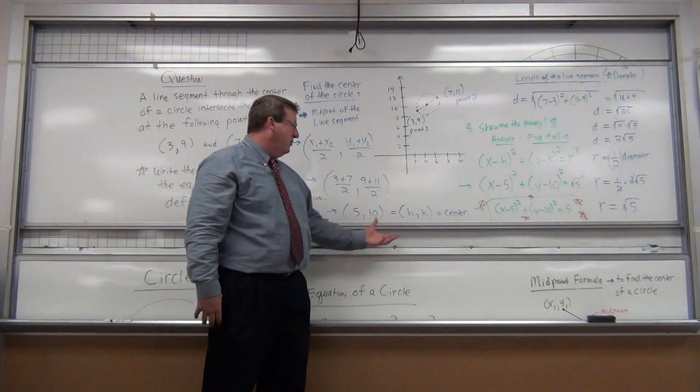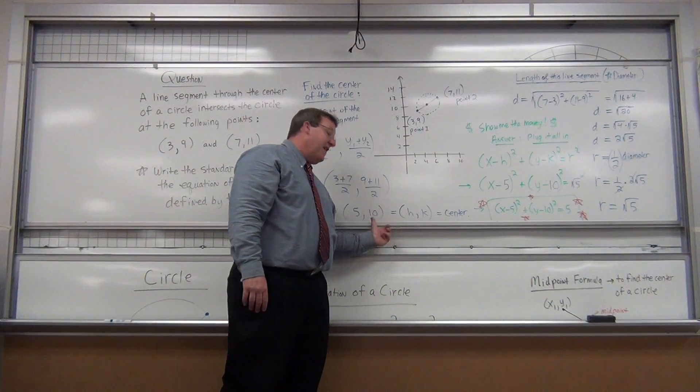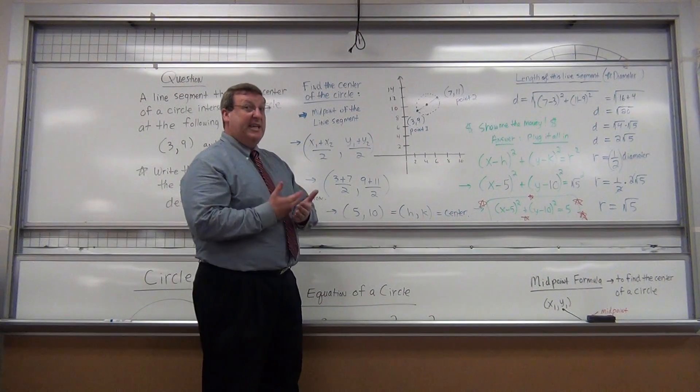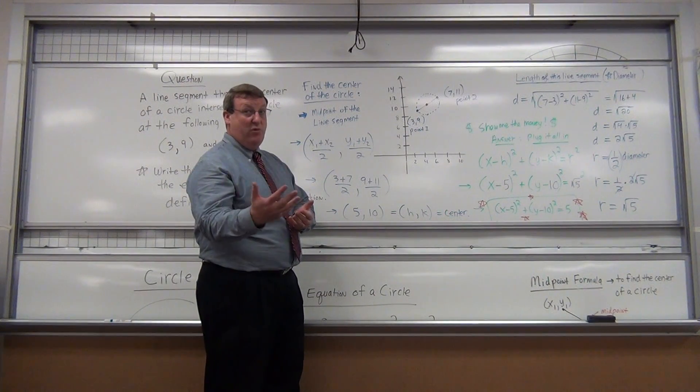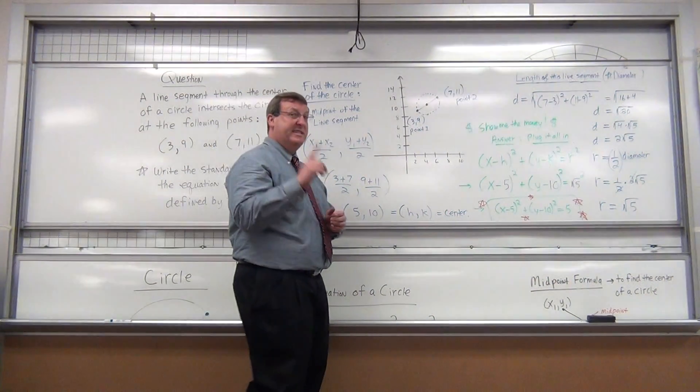If you have (5, 10), your ordered pair, the center is (5, 10). Now you know one key point of the formula to write your equation of a circle. What's the next point?